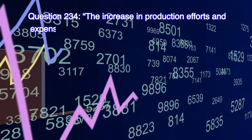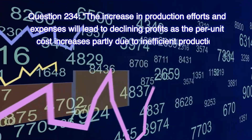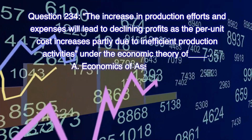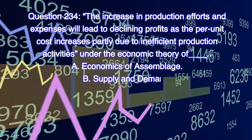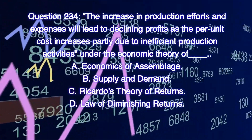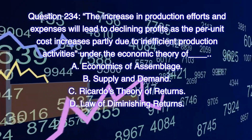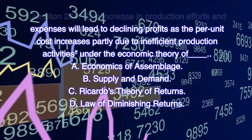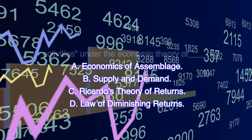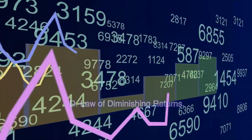Question 234. The increase in production efforts and expenses will lead to declining profits as the per unit cost increases, partly due to inefficient production activities under the economic theory of ___. A. Economics of assemblage. B. Supply and demand. C. Ricardo's theory of returns. D. Law of diminishing returns.